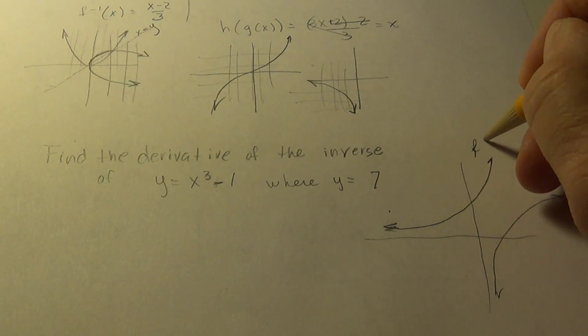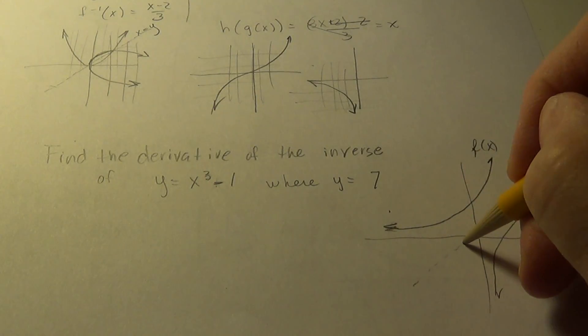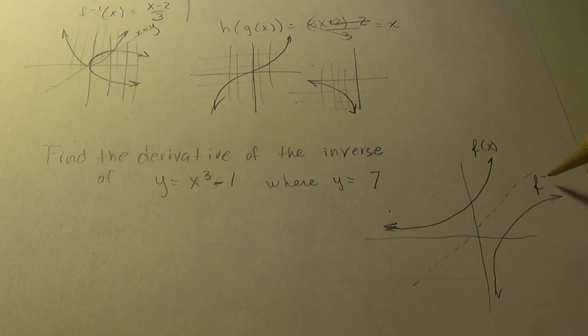It would look like this. So, if I call this f of x, this would be the reflection across the line y equals x. And that would be its inverse function.